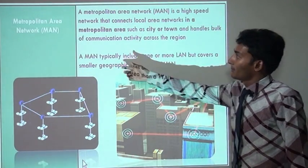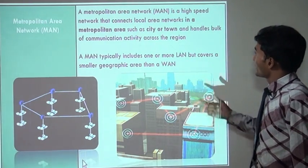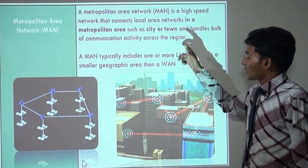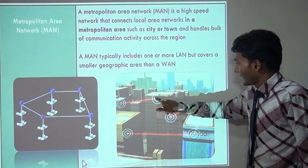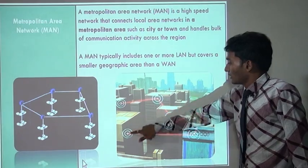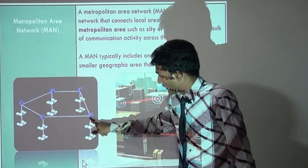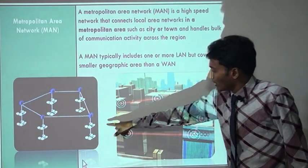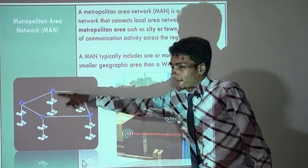The second one is metropolitan area network. A metropolitan area network provides a high-speed network that connects local area networks in a metropolitan area. In this figure, we can see that these buildings are connected through LAN in a metropolitan area. In each building, computers are connected through LAN, but these LANs are then connected across a metropolitan area.